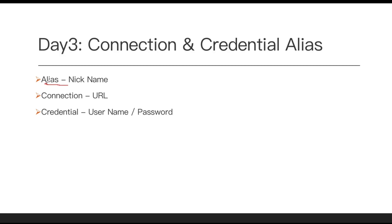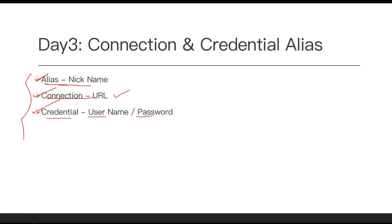First thing first we'll create an alias. Under this alias there will be a connection and then a credential. For our case, snowexpert.rohit.atlassian.com is the connection URL. That will be the connection URL, and in the credential we need to pass the username and password. So connection and credential have three components: first is the alias, second is the connection, and third is the credential. With the combination of these three we are going to integrate with our Jira instance.